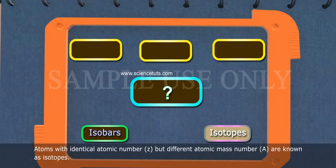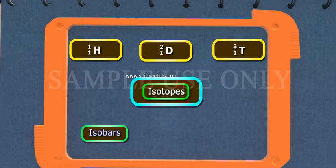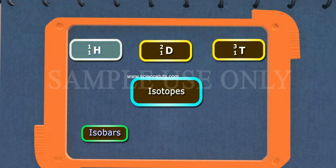Atoms with identical atomic number but different mass number are known as isotopes. For example, considering hydrogen atom again, 99.985% of hydrogen atoms contain only one proton. This isotope is called protium, H-1-1.